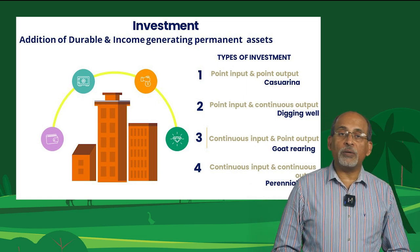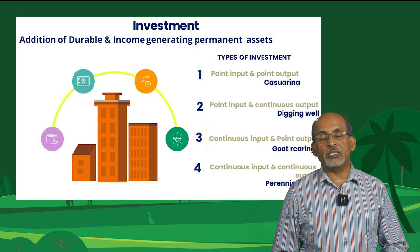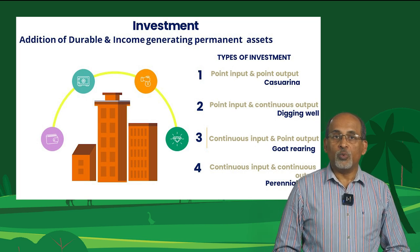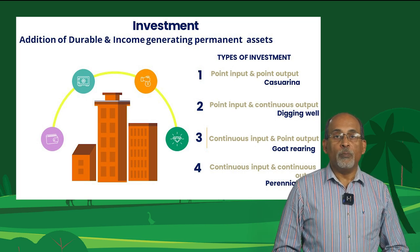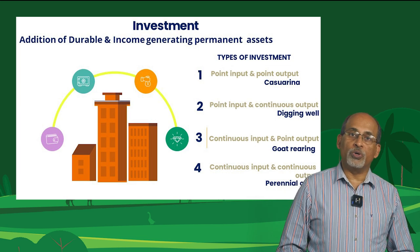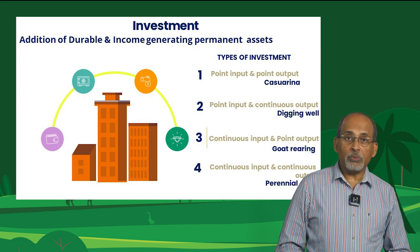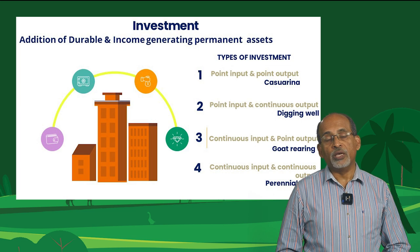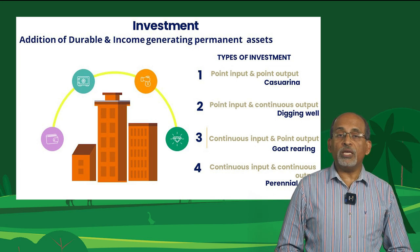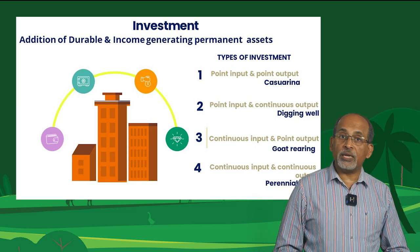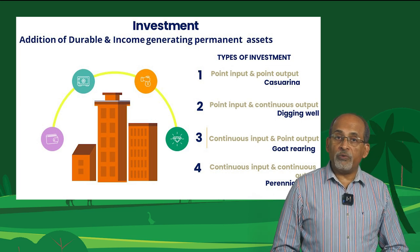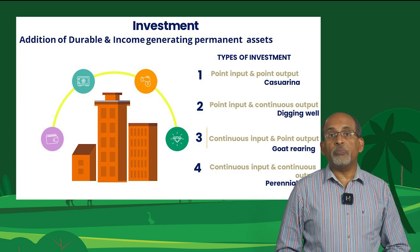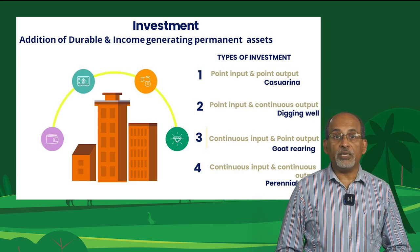There are four types of investments in agriculture. The first is point input and point output. Think about investing on cashew arena or teak. We make the investment at the time of planting and we will be getting the returns once, maybe after many years.